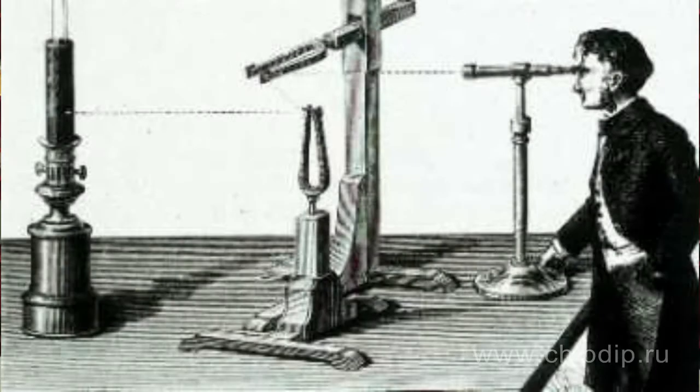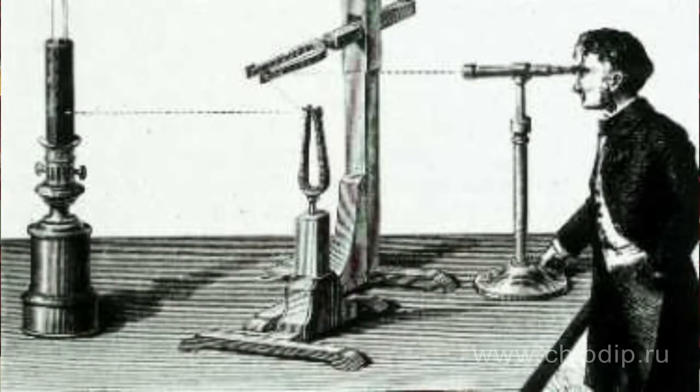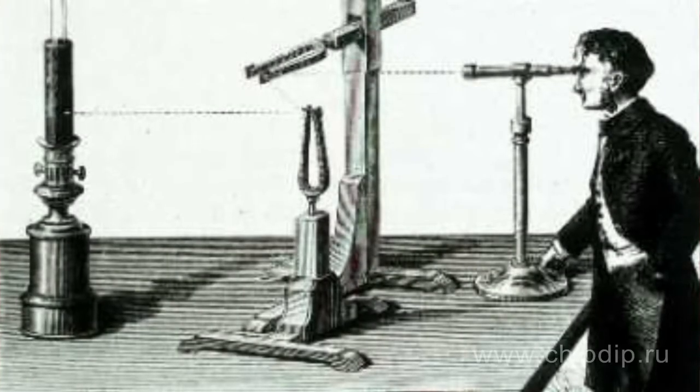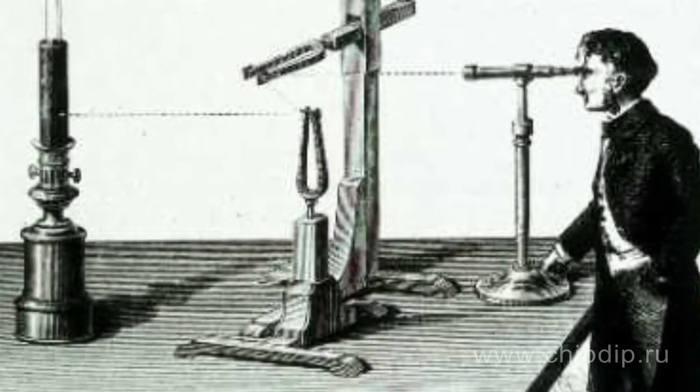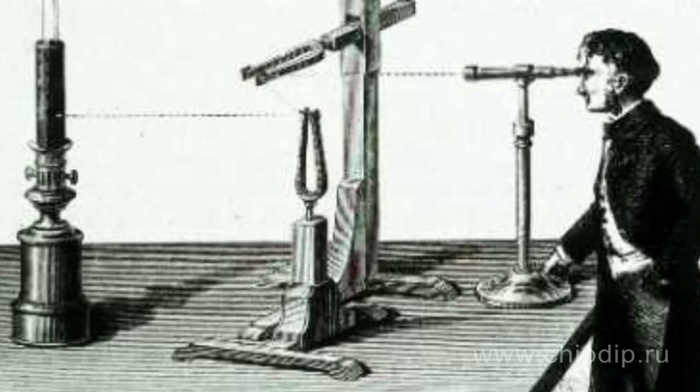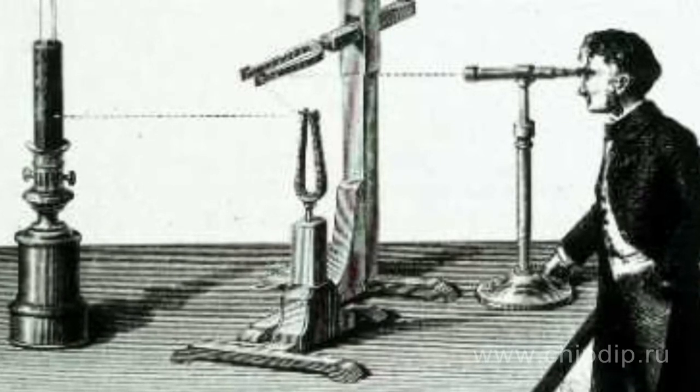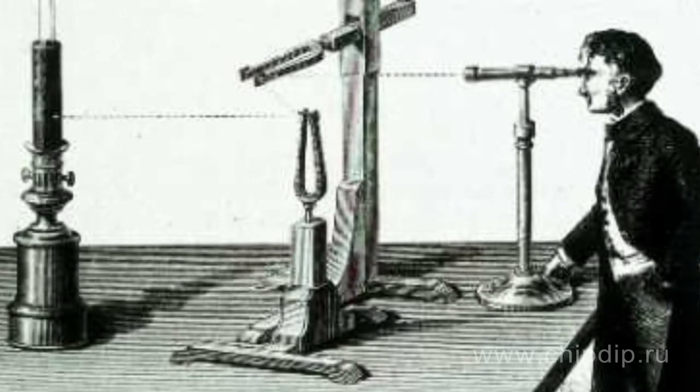The device consisted of a source of light, two tuning forks — vertical and horizontal — and a telescope used to observe the changes in figures depending on the changing oscillation frequency in the tuning fork.